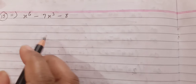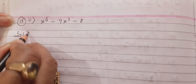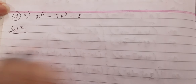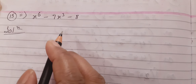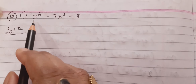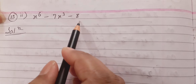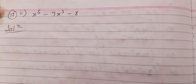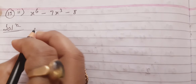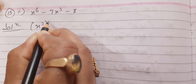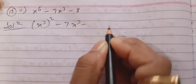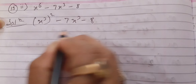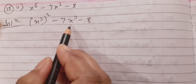Now the last question of this exercise, question number 13 second. Our question is x⁶ - 7x³ - 8. We can solve it by the middle term splitting method. I will solve it in an easy way. We can let x³ equal to a, so our equation becomes a² - 7a - 8.